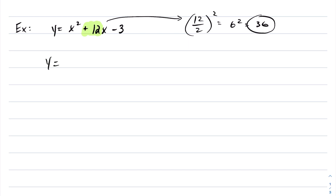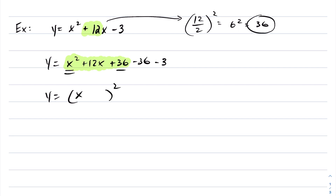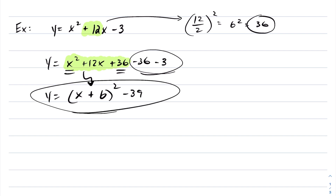Now what I'm going to do is write down your first two terms, then add that number, subtract that number, and put down your minus 3. Every time you do that, you've now forced a perfect square on these first three terms. This is going to factor into: the square root of x squared is x, the square root of 36 is 6, and then you put that plus sign back down. Collect like terms — this becomes negative 39 — and now we have completed the square and we are in vertex form.